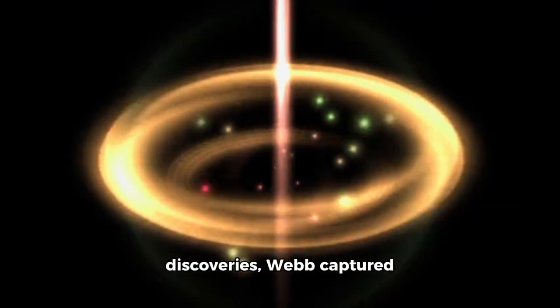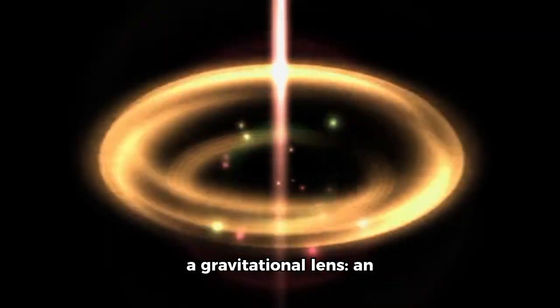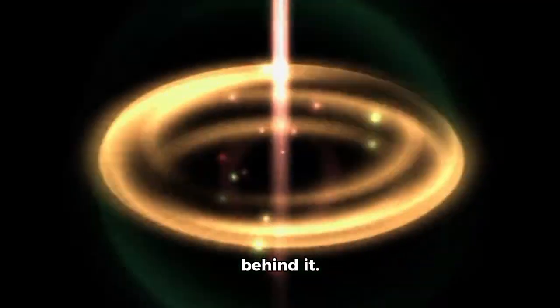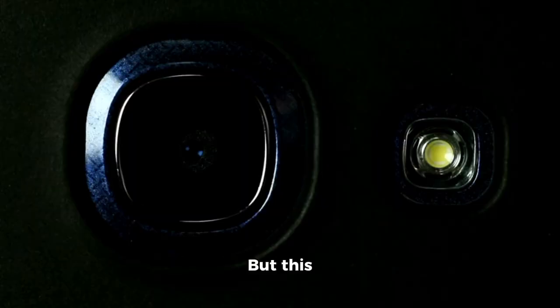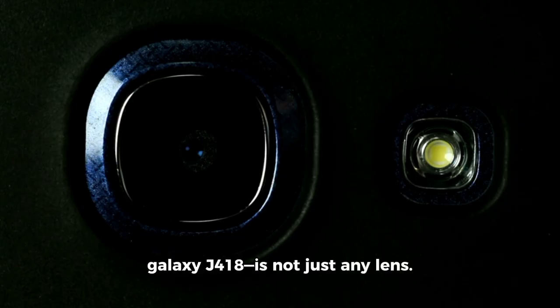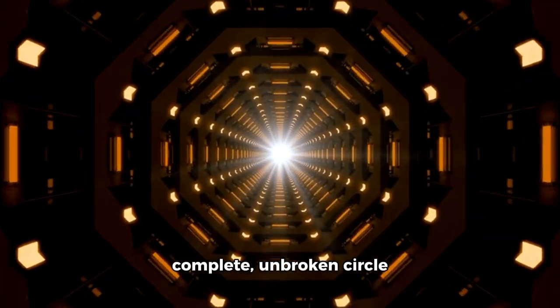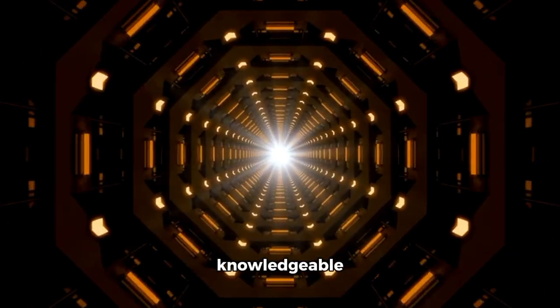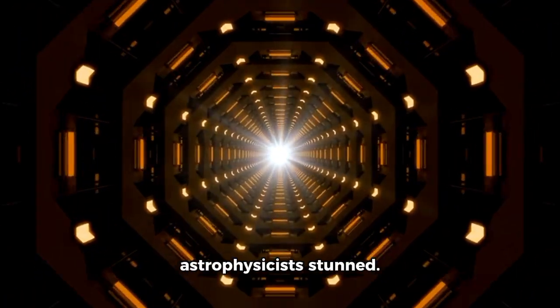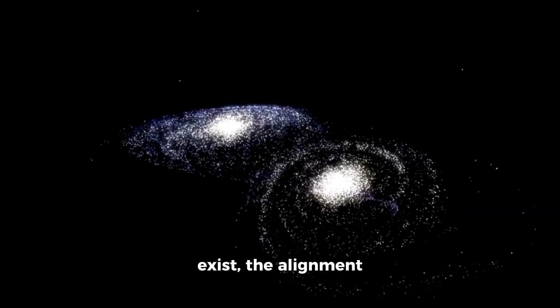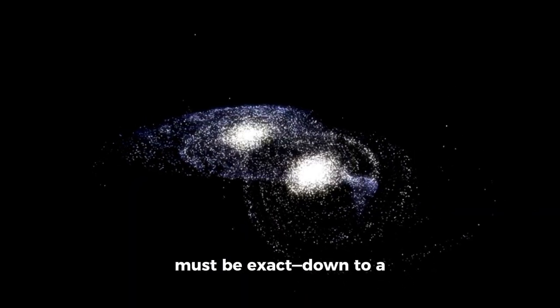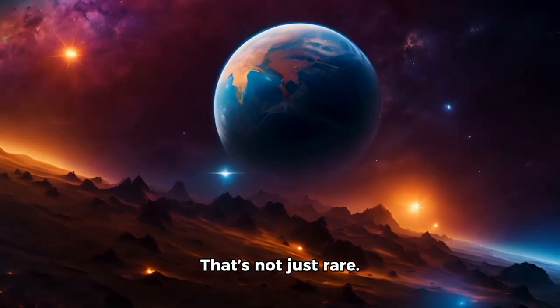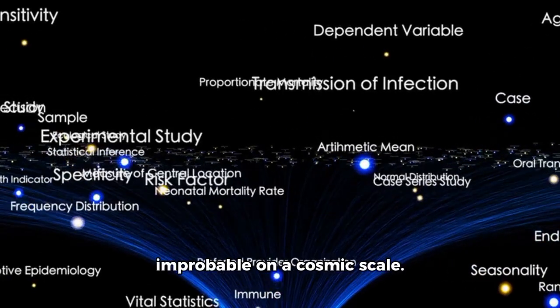In one of the most surreal discoveries, Webb captured a gravitational lens—an Einstein ring caused by a massive galaxy bending the light of one directly behind it. But this ring surrounding Galaxy JW418 is not just any lens. It is almost perfect, a complete and unbroken circle of light resembling mathematical symmetry that left even the most knowledgeable astrophysicists stunned. For such an image to exist, the alignment between the two galaxies must be exact down to a degree or two across thousands of light years. That's not just rare—that's statistically improbable on a cosmic scale.